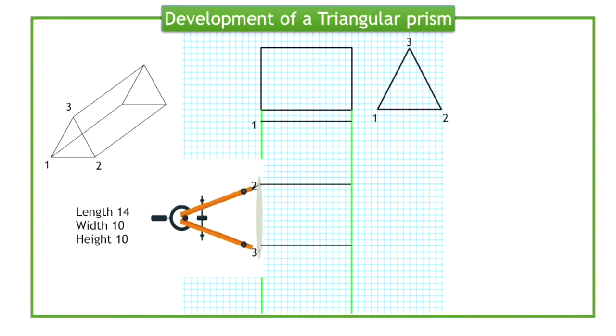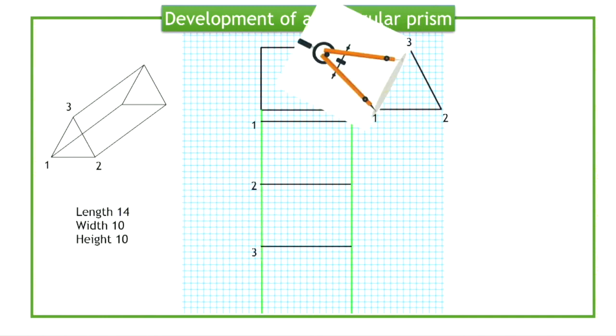We get point 3, and the same process is carried out to get the last rectangular side.